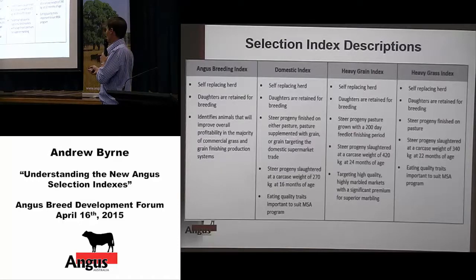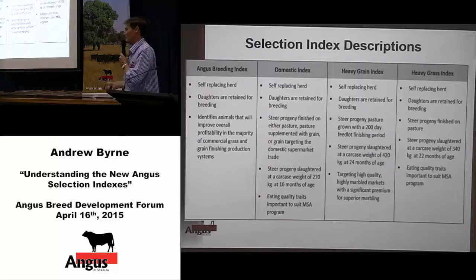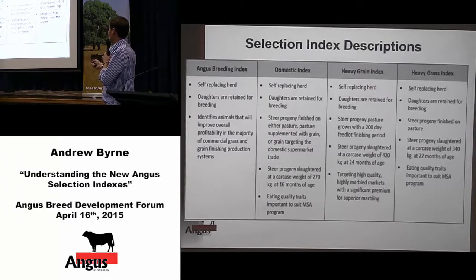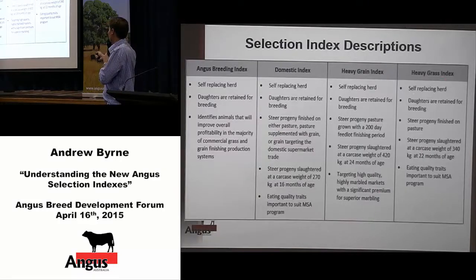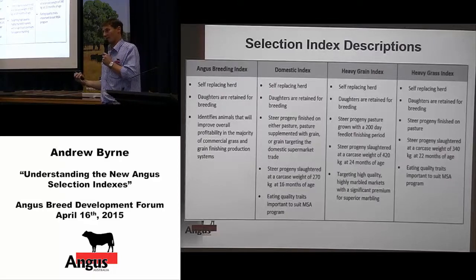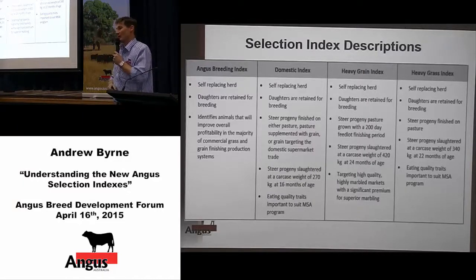The domestic index covers steers being finished on even pasture, grain assist, or short grazing periods — for a 270 kilo carcass at 16 months of age, with some emphasis on eating quality traits. All the indexes are self-replacing indexes, so they all have emphasis on some of the maternal traits. The heavy grain index covers a 200-day feedlot finishing period, 420 kilos at 24 months of age, with marbling premiums. The heavy grass-fed index covers steers being finished on grass at 22 months of age, 340 kilo carcass weight, with some eating quality emphasis. So we have four indexes hopefully suited to the major production systems for which Angus animals are used.